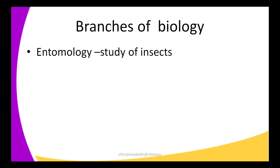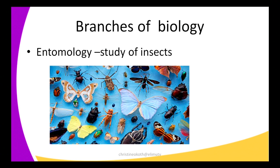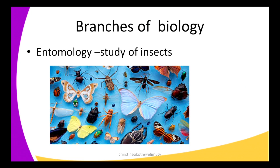The next branch of biology is entomology — this is basically the study of insects. We have very many types of insects. We study what characteristics these organisms possess so that they can be called insects. For instance, insects have three body parts, most of them have wings, and they have three pairs of legs. We also study how they are useful to human beings, how they are harmful, and what we can do to minimize their bad effects — for example, mosquitoes bring about malaria, so we study how we can prevent or minimize the spread of malaria. All this is studied under entomology.